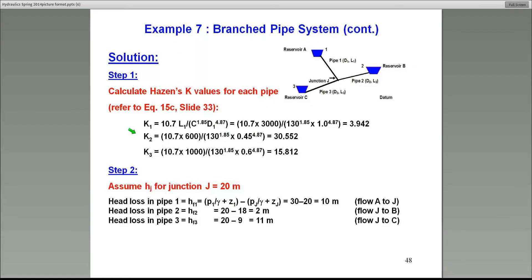So the first thing we're going to do is calculate all the K values. That's in all hydraulic problems, pipe problems, this is the first step always. This is in SI units, so I use the formula 10.7: L divided by C to the power 1.85, and D to the power 4.87, all in consistent units. In this case, K1 is 3.942, K2 is 30.552, K3 is 15.812. Now remember, you have to do this computation accurately because there's no way to verify these numbers whether they're right or wrong.